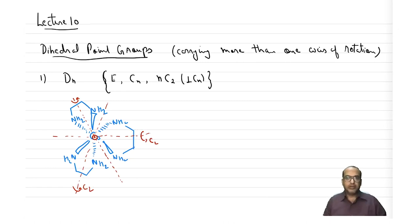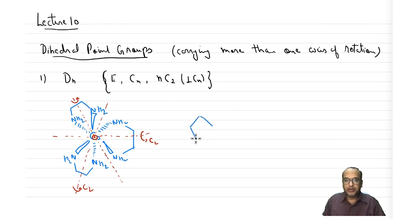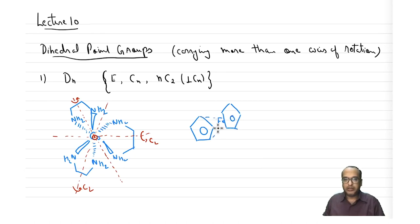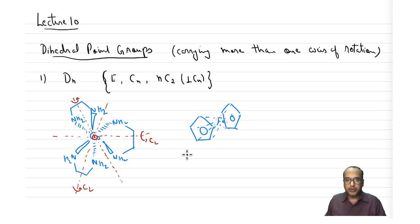Another example is ferrocene — a molecule with two five-membered aromatic rings and a central iron atom. The second ring is not exactly eclipsed with the first; there is a slight angle to it, unlike perfectly eclipsed ethane.